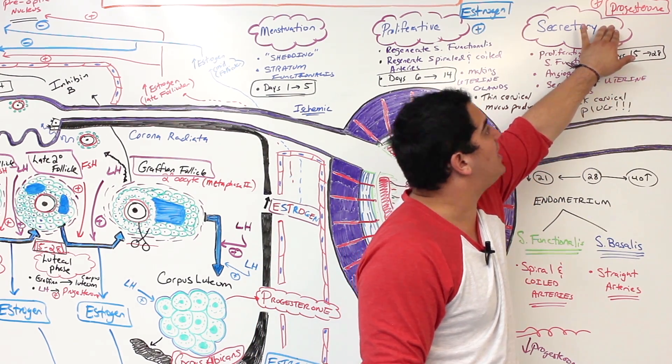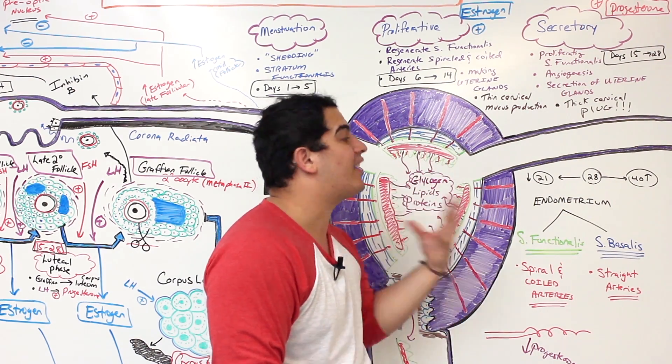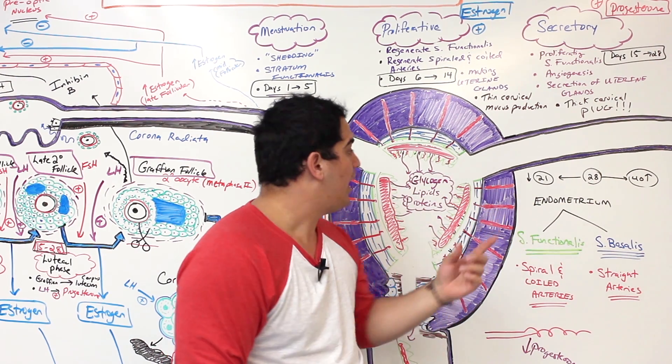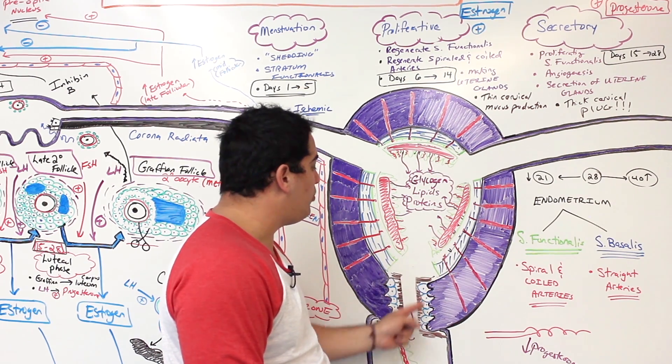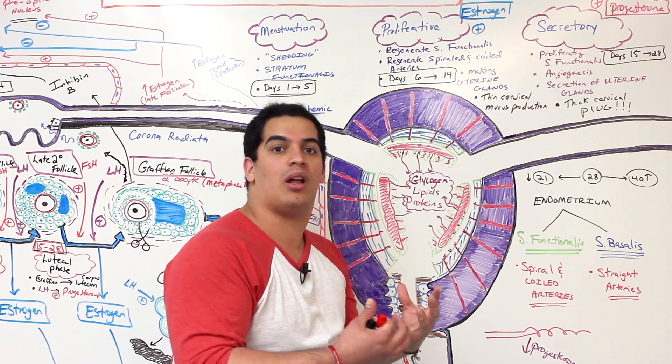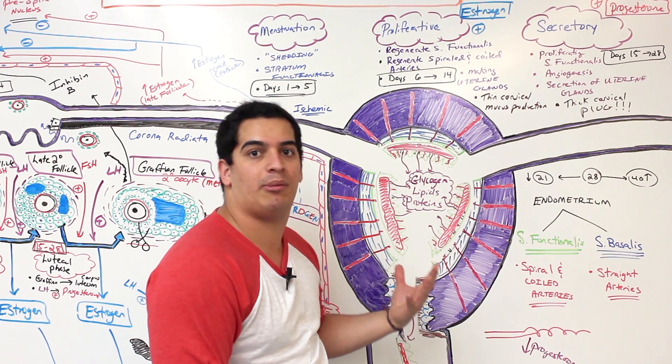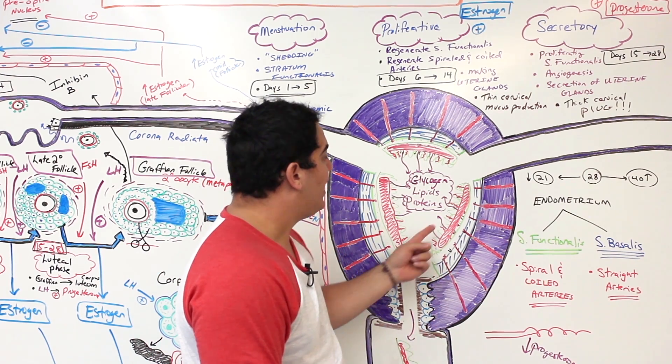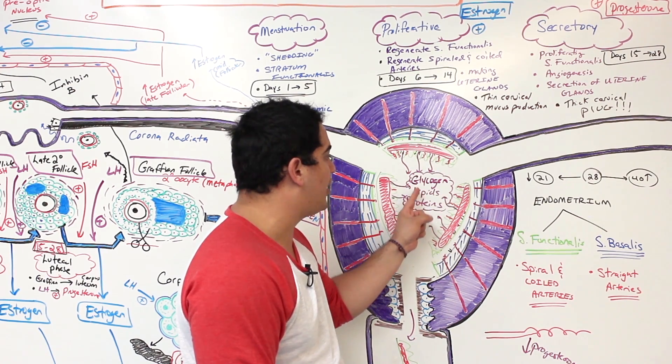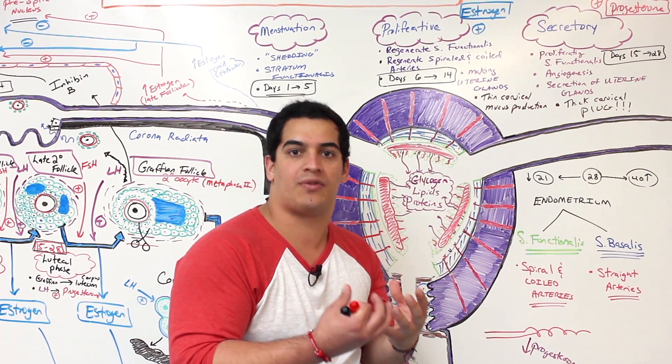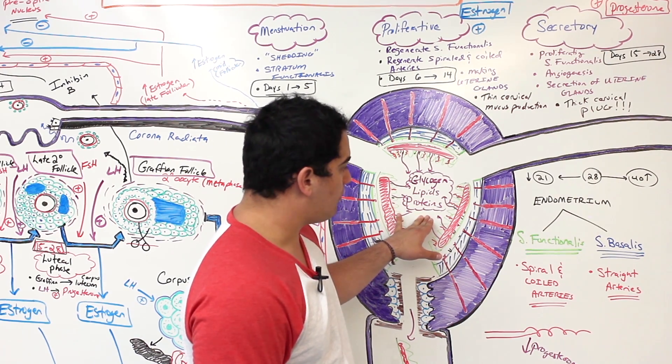Progesterone—what is he doing to the uterus? He's even making the stratum functionalis even thicker, so he's causing it to proliferate even more. It's making more of those spiral and coily arteries. It's also causing the cervical mucus production to switch into more of a thick cervical plug to prevent anything from being able to get up into the uterus where the developing embryo might possibly be. On top of that, what else was it doing? It was stimulating those uterine glands to start producing a broth or fluid rich in glycogen, lipids, and proteins, which provide a nutritive source for the possible developing embryo.